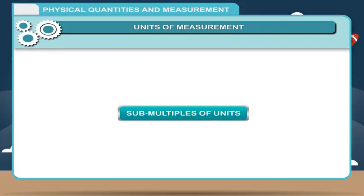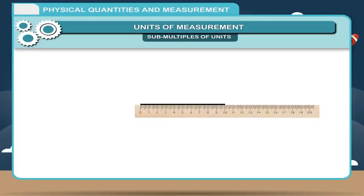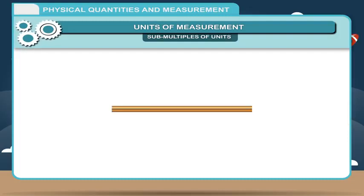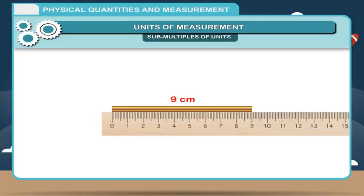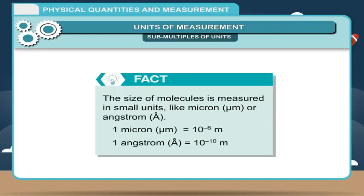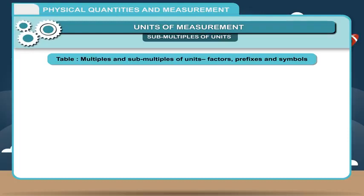Sub-multiples of Units: Sub-multiples are the factors used to create smaller forms of units. Sometimes we have to measure smaller lengths, so we use sub-multiples of units. For example, if we want to measure the length of a small wire, we measure in centimetres or millimetres. 1 metre = 100 centimetres; 1 metre = 1000 millimetres; 1 centimetre = 10 millimetres. Fact: The size of molecules is measured in small units like micron or angstrom. 1 micron = 10⁻⁶ metres; 1 angstrom = 10⁻¹⁰ metres.